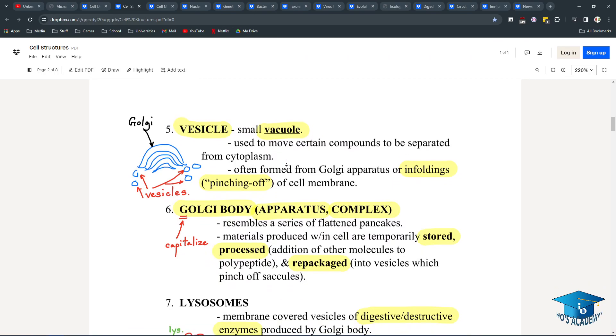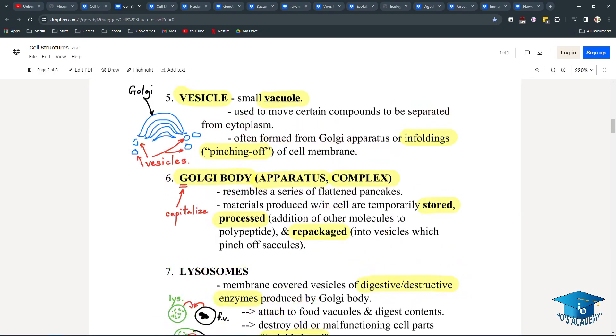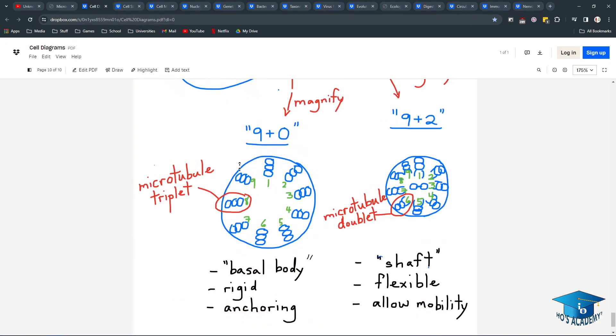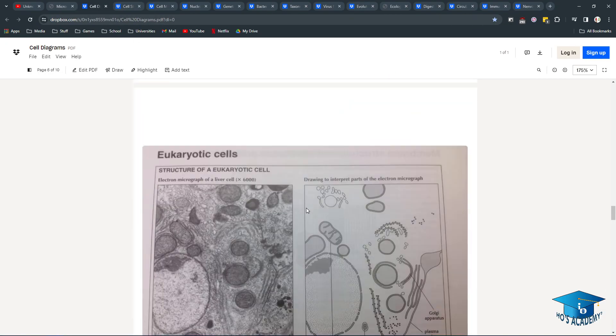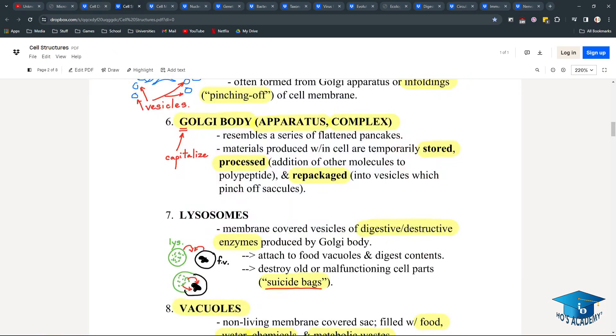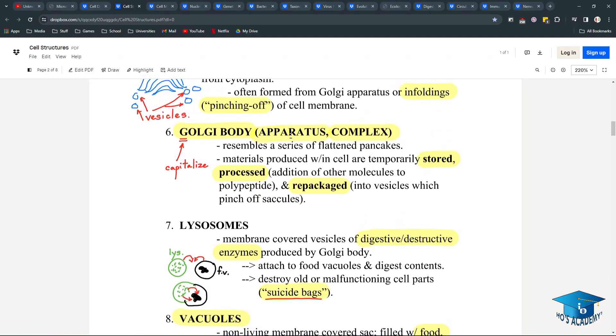Vesicles are small vacuoles that are used for transport. They're made from pinching-offs of the Golgi apparatus. The Golgi body, or Golgi apparatus, Golgi complex, they're all the same. Looks like pancakes from that photo from earlier. And materials are stored, processed, and repackaged. So it sends things out.